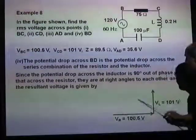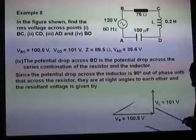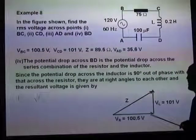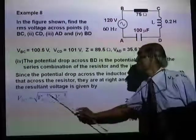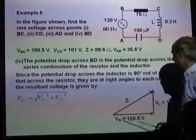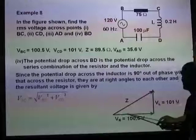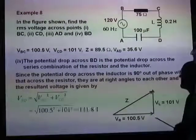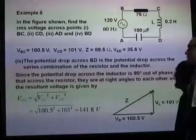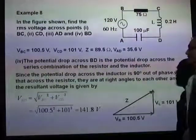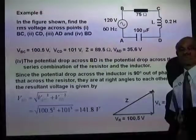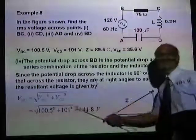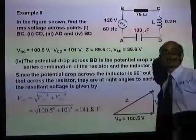Since these two are at right angles, VBD will be the resultant: VBD equals the square root of VBC squared plus VCD squared, which gives 141.8 volts. You probably need to look at this one more time.